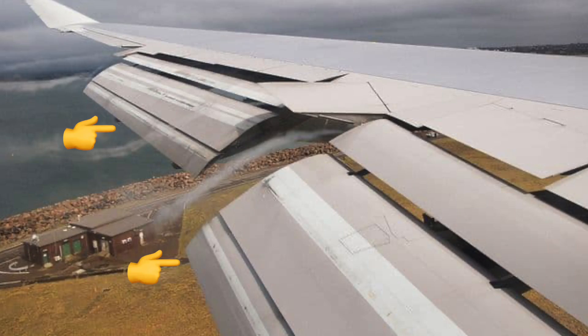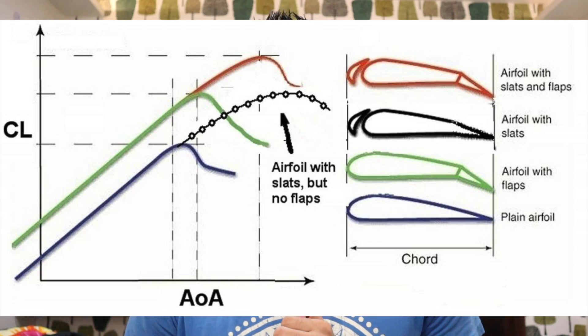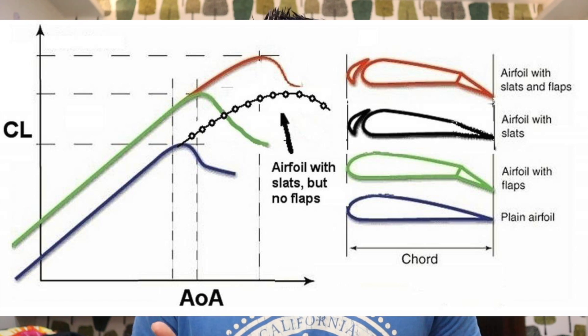Before we get started, you need to understand what exactly flaps are. Flaps are extensions on the wing which come out when the pilot selects the lever in the cockpit. When the flaps come out, the lift produced by the wing increases and so does the drag. The flaps help a pilot fly the airplane at a slower speed than normal, so the higher the flap setting, the lower your speed for approach as well as for takeoff.